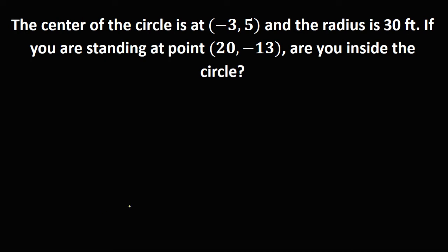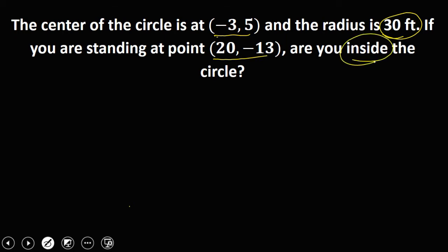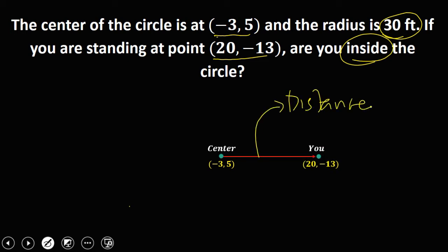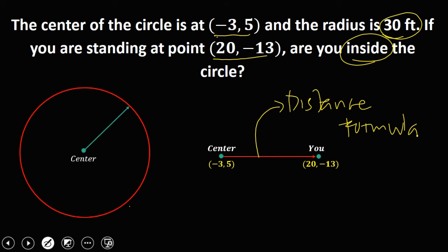The center of the circle is at point negative 3, 5 and the radius is 30 feet. If you are standing at point 20, negative 13, are you inside the circle? To solve this problem, we just need to compute the distance from the center to your point using the distance formula. Note that the radius is 30 feet — that's the distance from the center to any point on the circle.